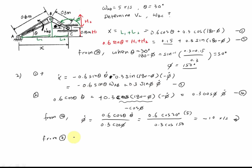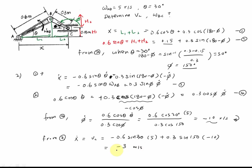From equation 3, x-dot is the velocity of C. Substituting: x-dot equals negative 0.6 sine 30 times 5 plus 0.3 sine 150 times (negative 10). Computing gives x-dot equals negative 3 meters per second. The negative sign means C moves to the left. This makes sense: when the link rotates in that direction, this link rotates accordingly, and the collar moves to the left — that's why we have a negative here. To be continued.